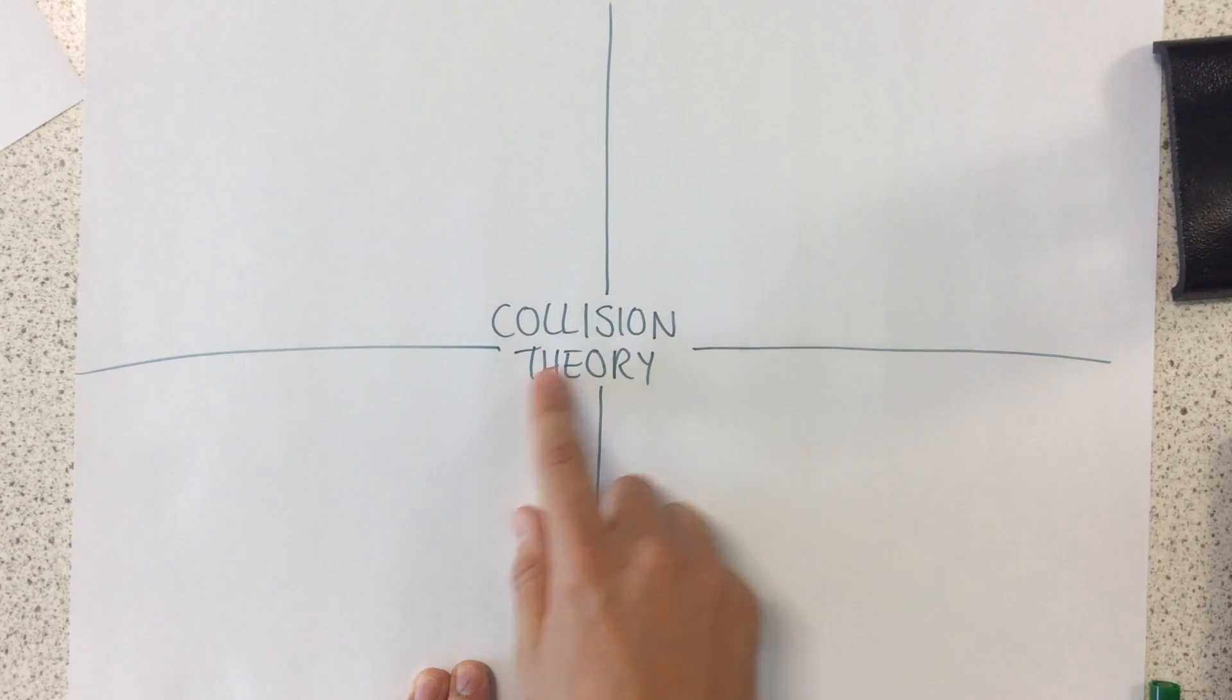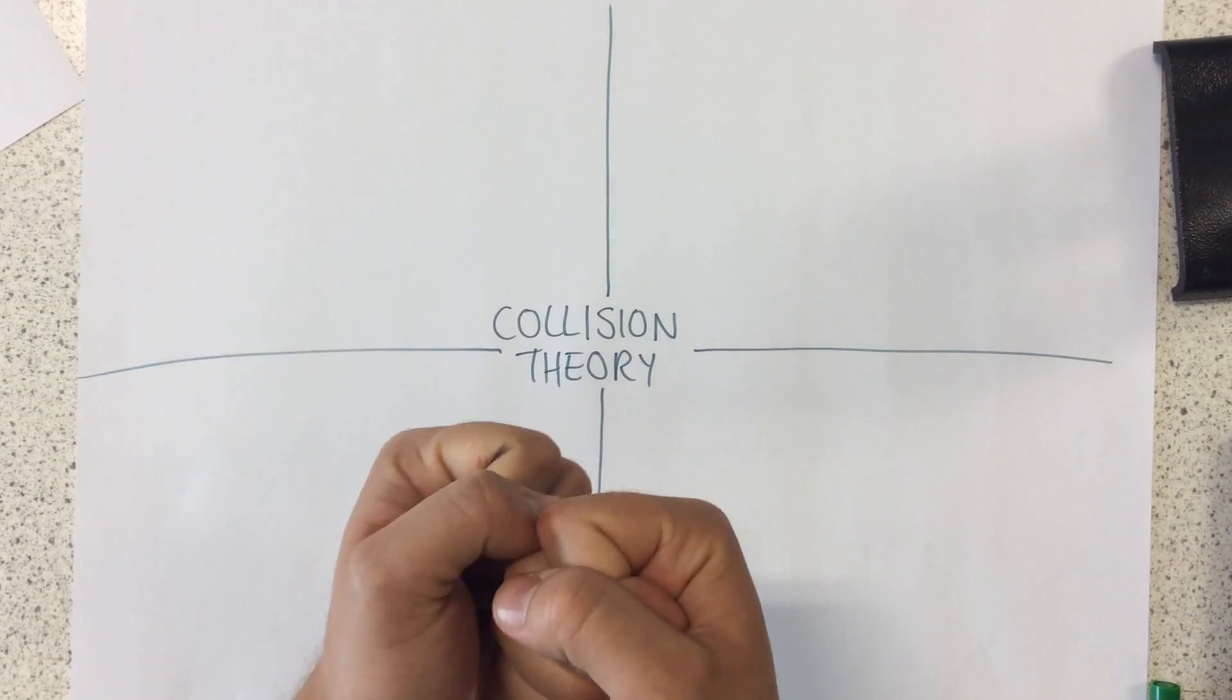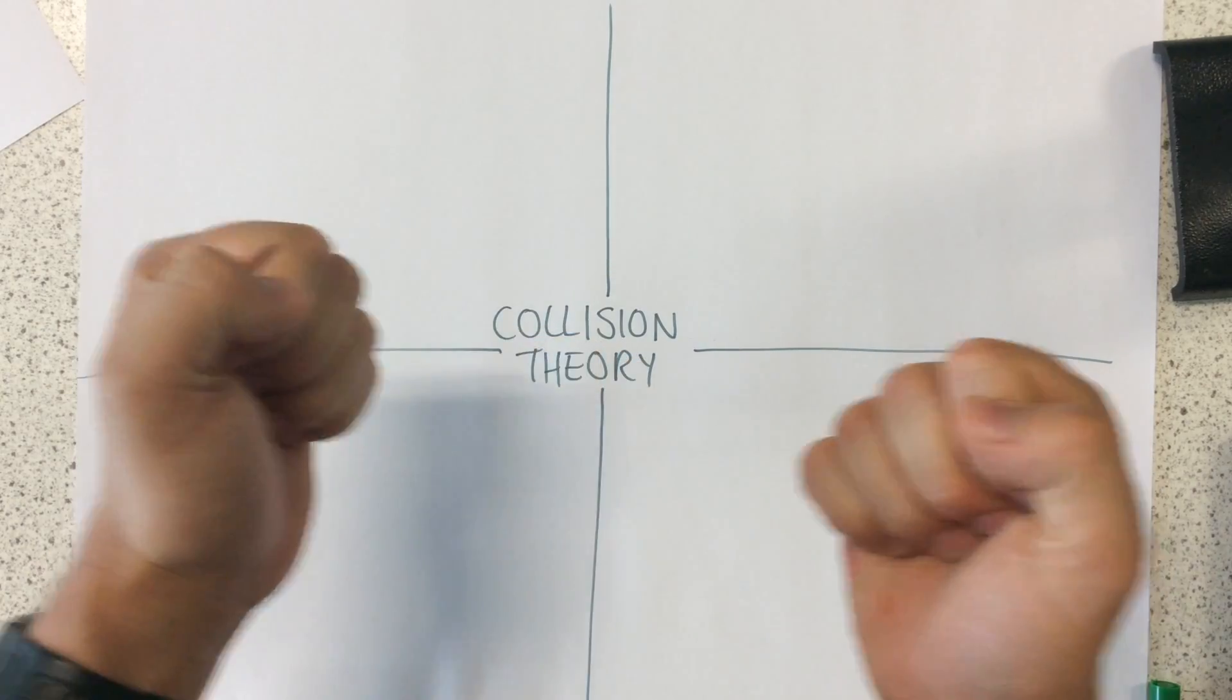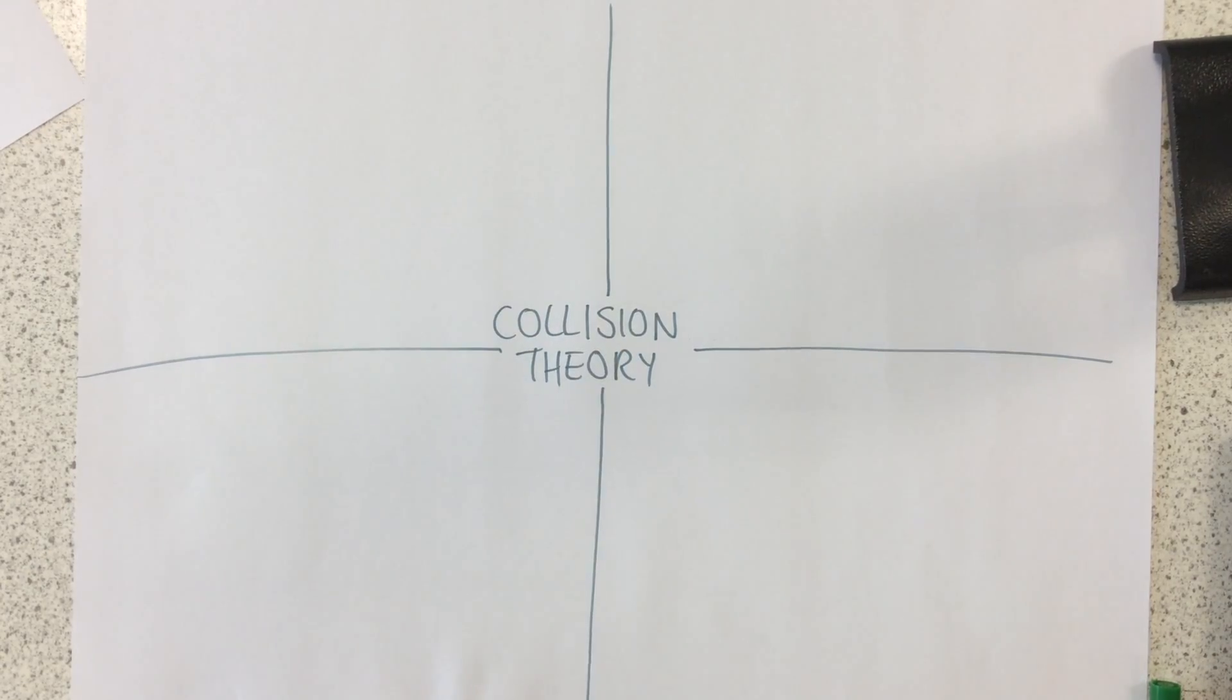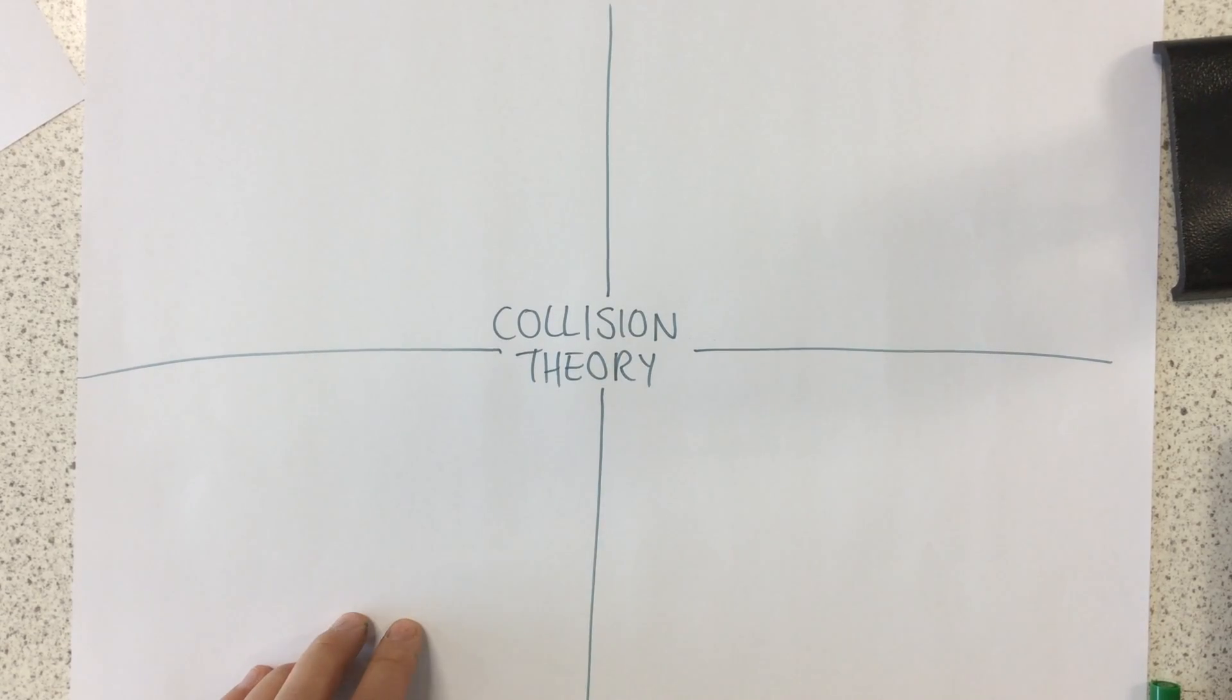Today I'm going to talk to you about collision theory. Collision theory is a way of explaining rates of reaction based on how particles collide with each other, so bump into each other.